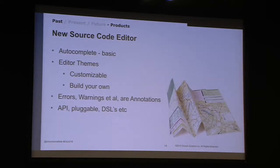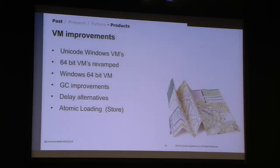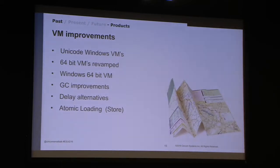With this new source code editor there's an API — it's pluggable. If you have a domain-specific language you want to support, you can easily support that with this new source code editor. Some other changes on the VM side: our Windows VMs are all Unicode. We revamped all our 64-bit platforms and introduced a 64-bit VM on Windows. We made garbage collection improvements, came out with an alternative type of delay for some circumstances where there were issues depending on how they were used. In Store, we also introduced atomic loading.